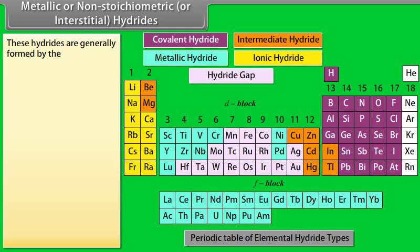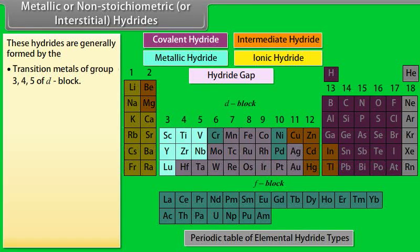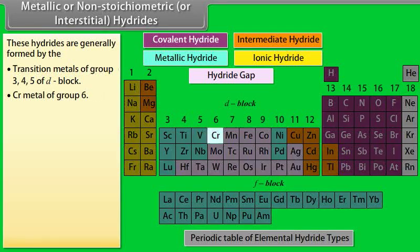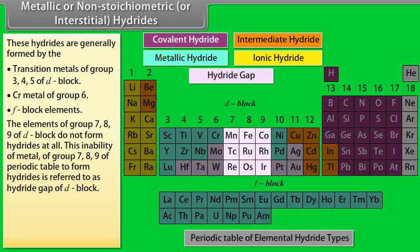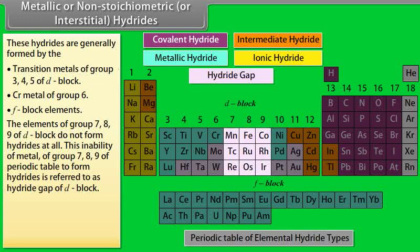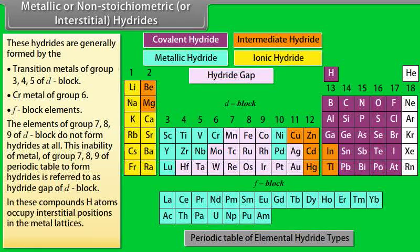Metallic or non-stoichiometric or interstitial hydrides. These hydrides are generally formed by the transition metal of group 3, 4, 5 of D-block, D-metal of group 6, F-block metals. The elements of group 7, 8, 9 of D-block do not form hydrides at all. This inability of metal of group 7, 8, 9 of periodic table to form hydrides is referred to as hydride gap of D-block. In these compounds, H atoms occupy interstitial positions in the metal lattices. For example, ScH2, LaH2.87.